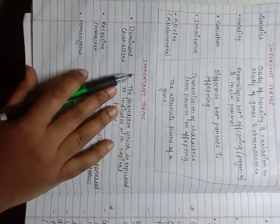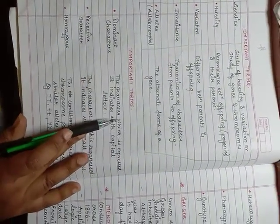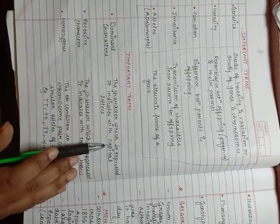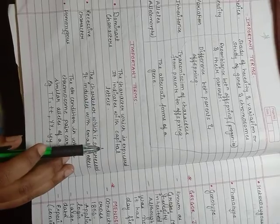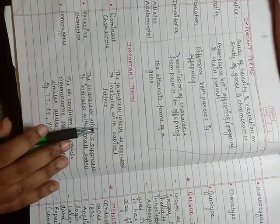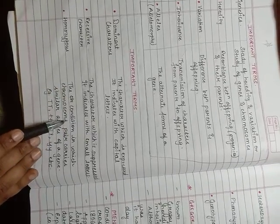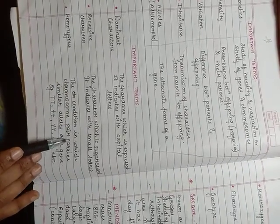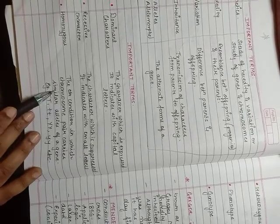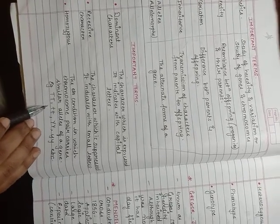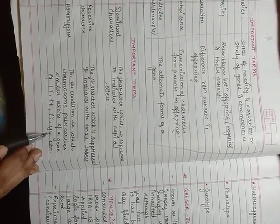Some more important terms. First one, that is the dominant characters. The character which is expressed. It is indicated with capital letters. Recessive character. The character which is suppressed. It is indicated with small letters. Homozygous. The condition in which the chromosome carries similar alleles of a gene. Example: capital T capital T, small t small t, capital Y capital Y, small y small y, etc.